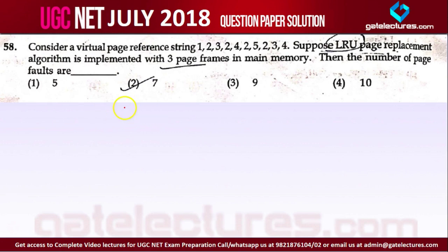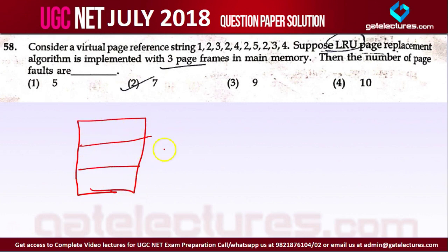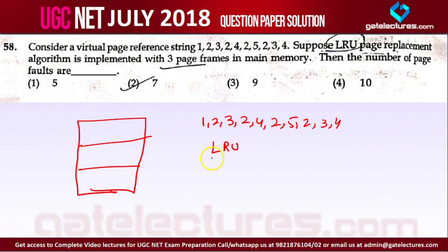We have this question which is very simple. They are saying we have 3 frames, and we have given a string that is 1 2 3, 2 4 2 5, and 2 3 4. We have to use the LRU technique and find out the number of page faults.